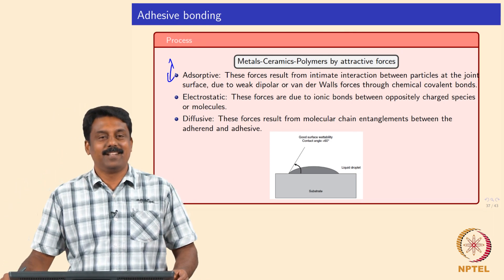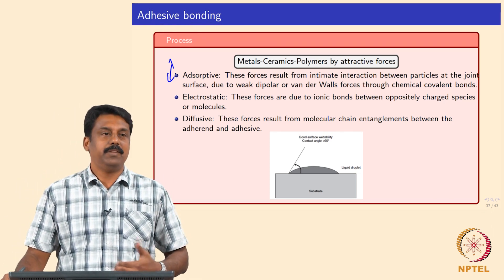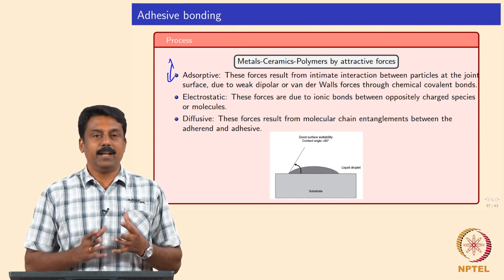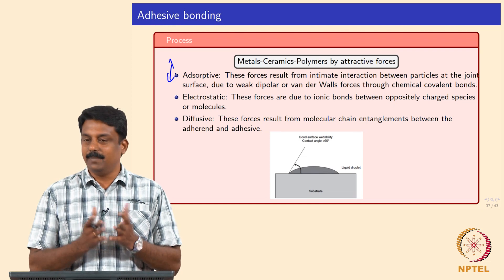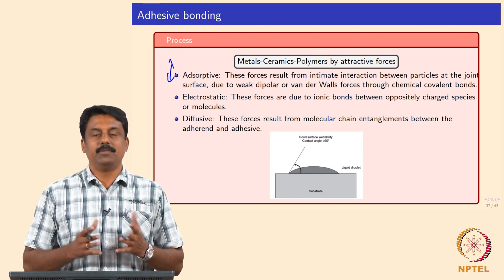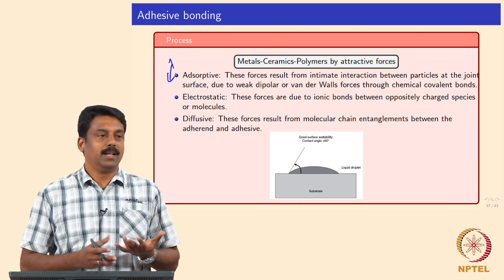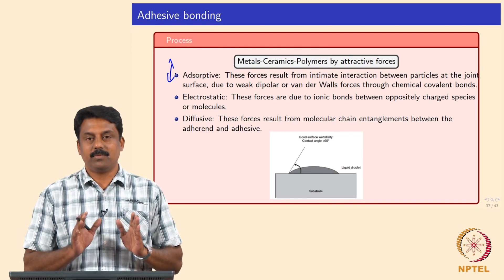Most of the common adhesives we use are all adsorptive, making weak covalent bonds or dipolar using van der Waals force. Electrostatic and diffusive joints are three major mechanisms by which we develop adhesives. Diffusive bonding is the best we can have, but it is very difficult to achieve. Most cases, if you have electrostatic with adsorptive joints, that is okay.